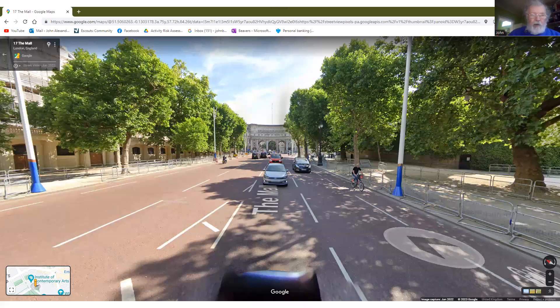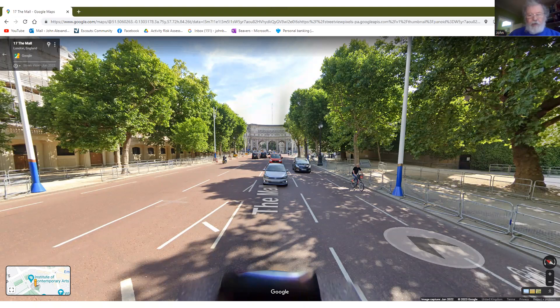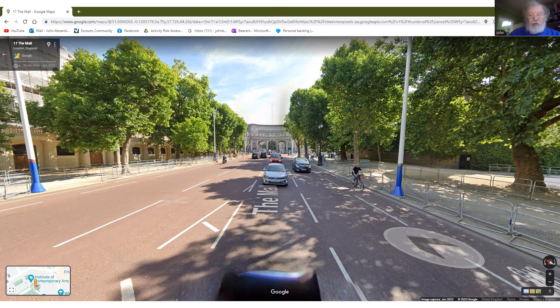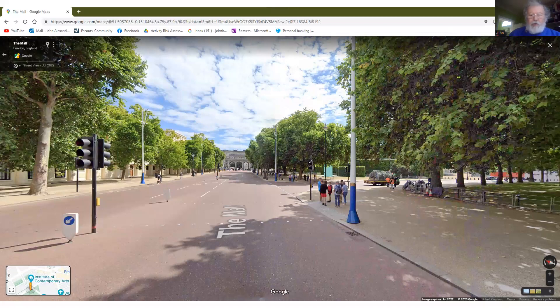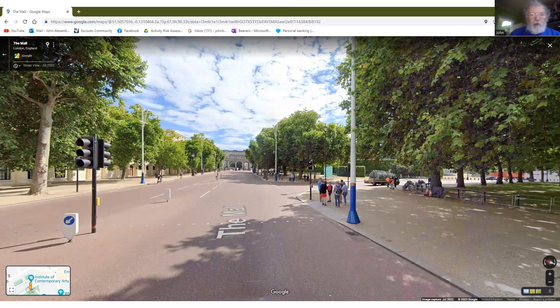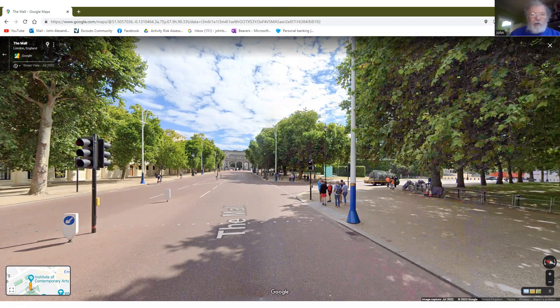As we move further and further away, Admiralty Arch gets smaller and smaller in the distance. And our estimation of how far we have gone from the Arch is probably going to become less and less accurate. And by the time we go past the next road junction, our estimate is probably going to be quite some way out.